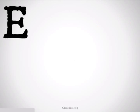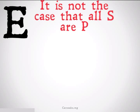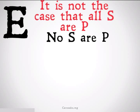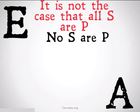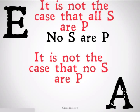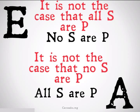The following arguments would be fallacious: 'It is not the case that all S are P, therefore no S are P.' This is a fallacious argument. Similarly, 'It is not the case that no S are P, therefore all S are P.' We cannot go from the denial of one statement to the affirmation of the other, because they could both be false.